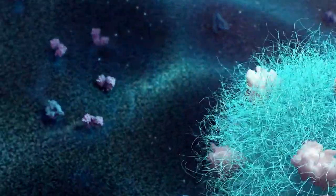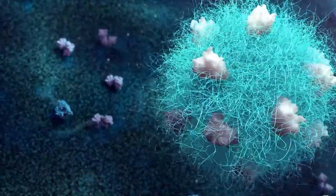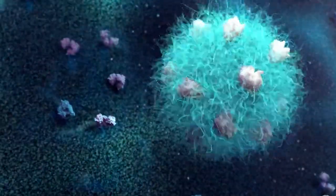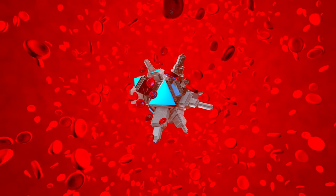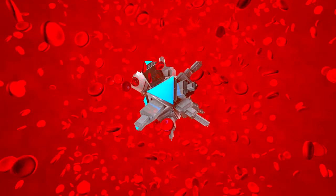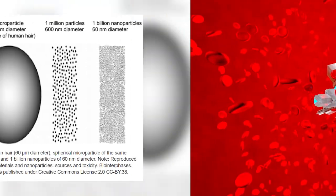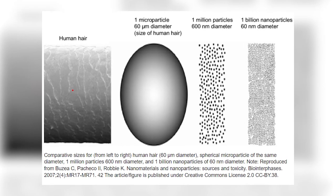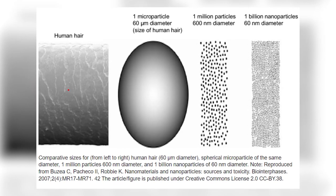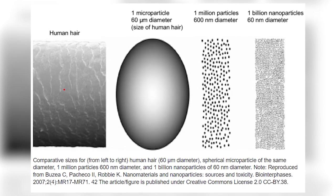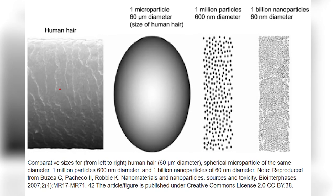Nanomedicine scientists have successfully programmed nanorobots to find tumors and cut off their blood supply while leaving healthy tissue unarmed. Of course, nanomachines are very tiny. Like 50,000 of them would fit across the diameter of a human hair. But talking about their effectiveness, they have the potential to pack a mighty punch in the fight against cancer.